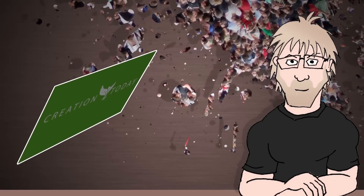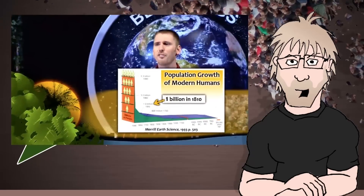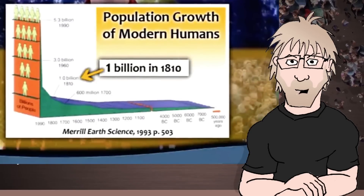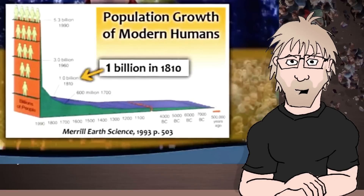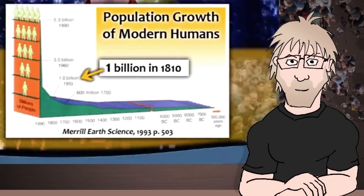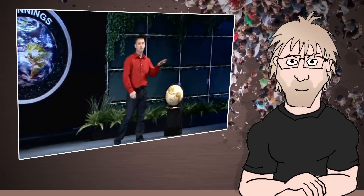And it shows the entire world population started about 4,400 years ago. No, it doesn't. At least not on the graph you chose to show. Let's bring that up and expand. The graph goes back to 500,000 years ago. Were you hoping it would go by too fast for anyone to notice? No, we haven't been here for millions of years. The evidence is clear — only a few thousand years. So the human population is a great way to show how long we've really been here.